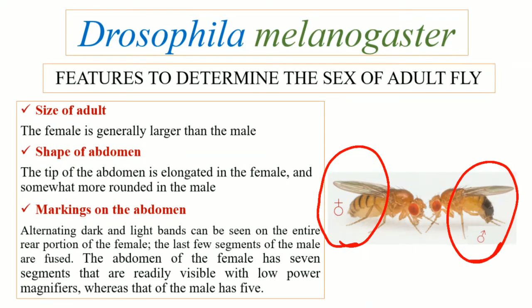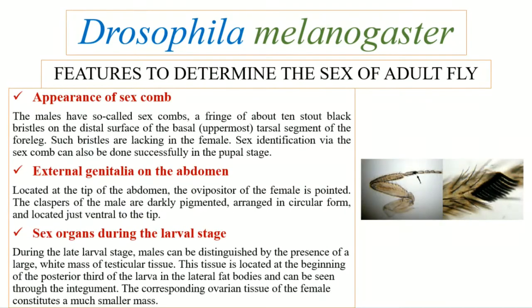The female abdomen contains almost seven segments, whereas the abdomen of male Drosophila melanogaster is comprised of five segments.